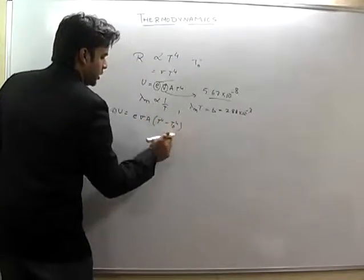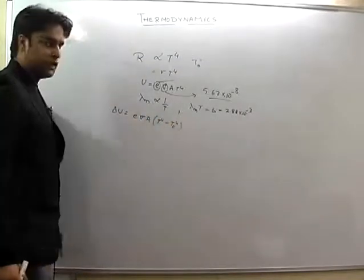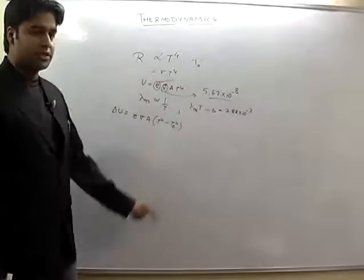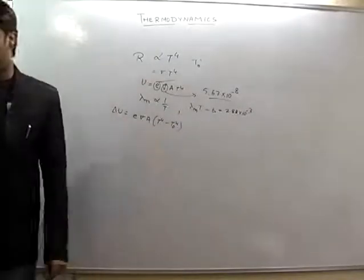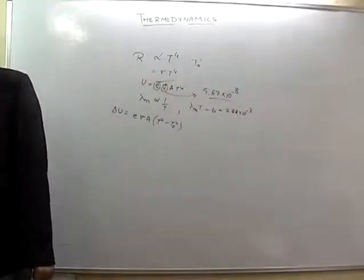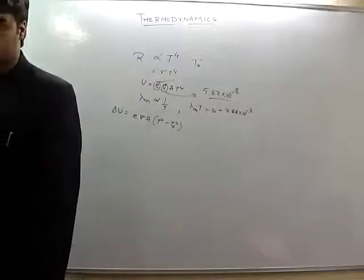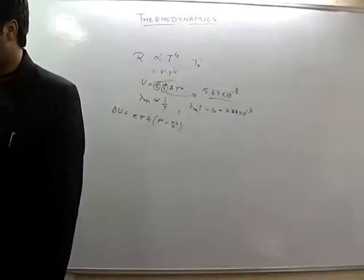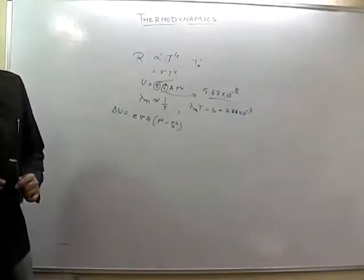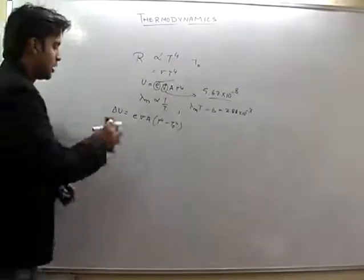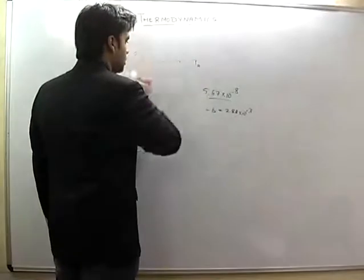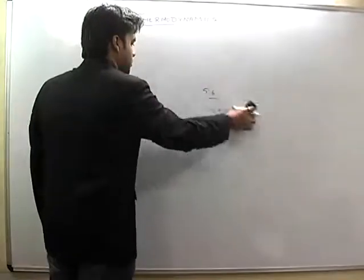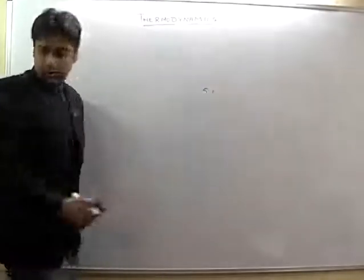Here T₀ is the surroundings temperature. When the temperature of the body is higher than the surroundings, radiant energy is emitted. Now comes the last part, which is Newton's cooling law, which is also important.